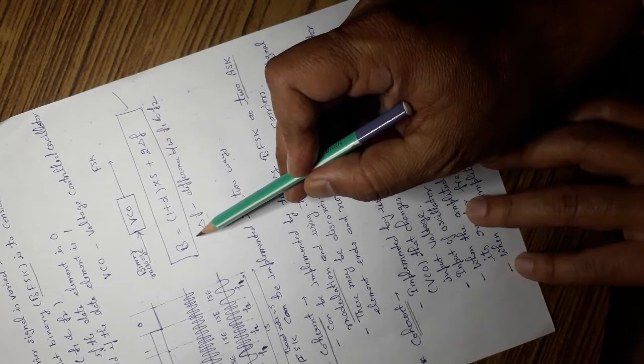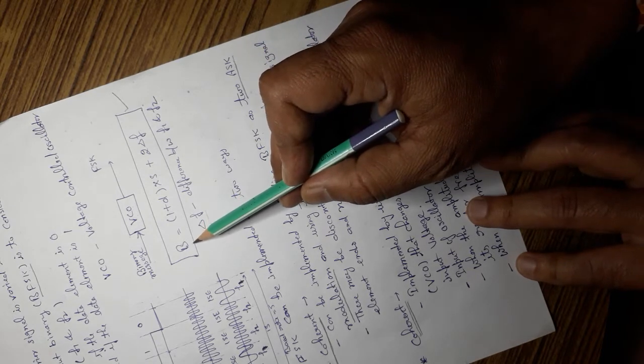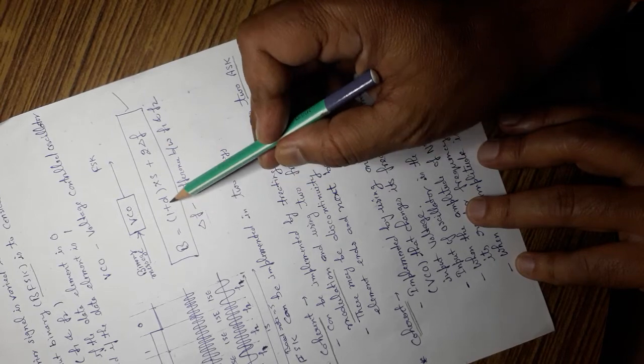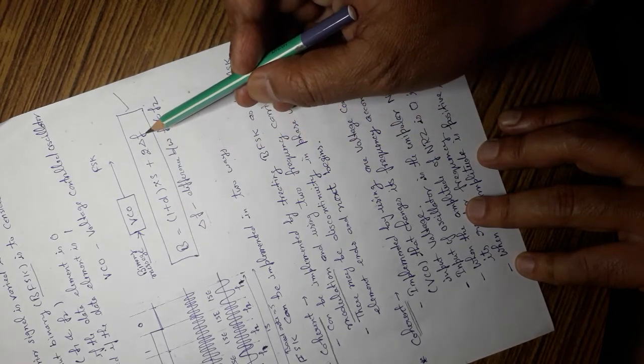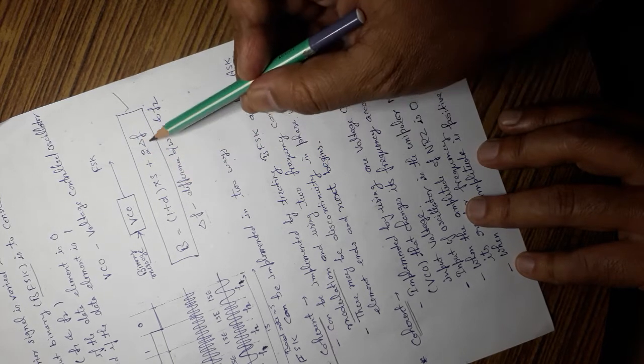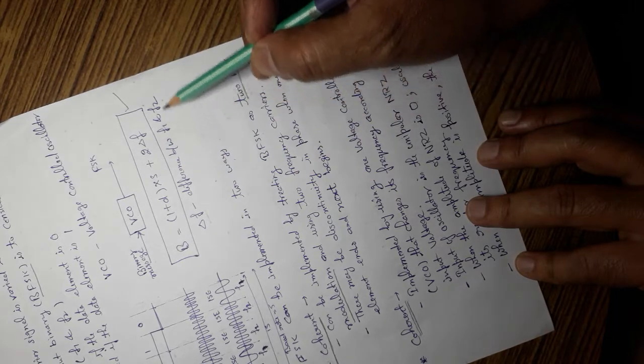This is the formula for calculation of bandwidth of FSK: 1 plus d into S plus 2 times delta f. This one is the extra factor, 2 times delta f, where delta f is the difference between F1 and F2.